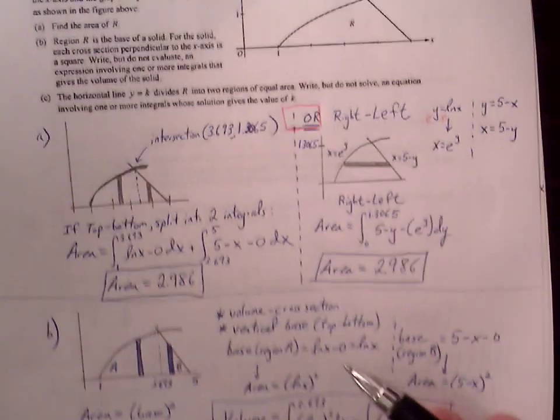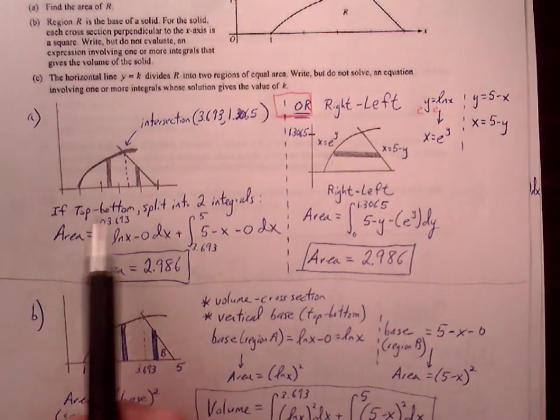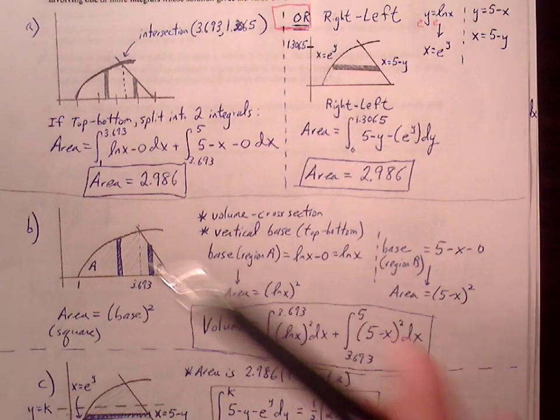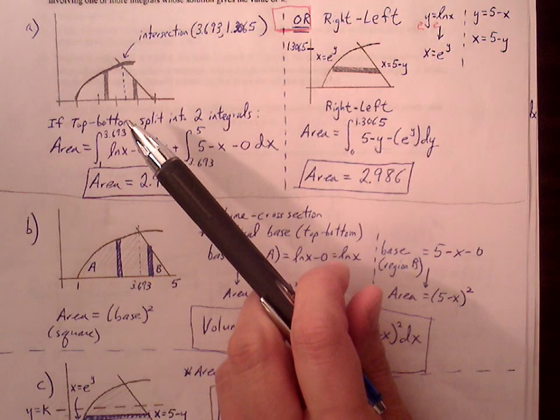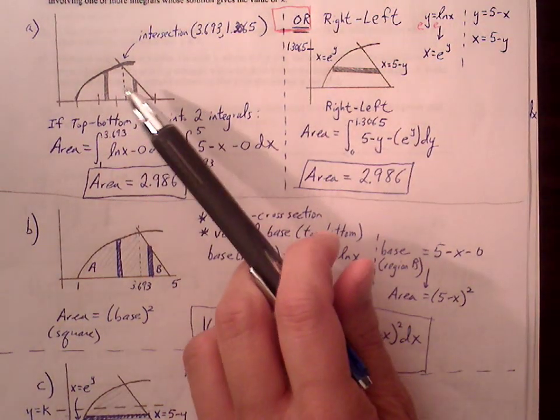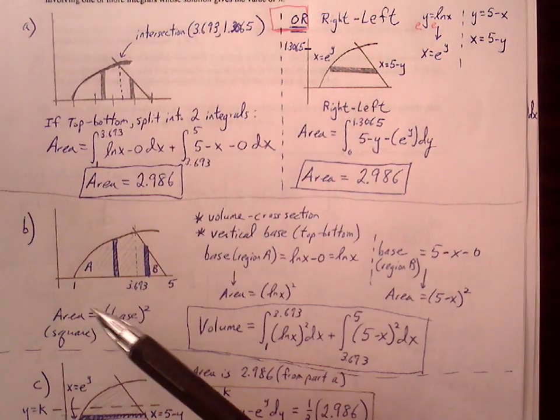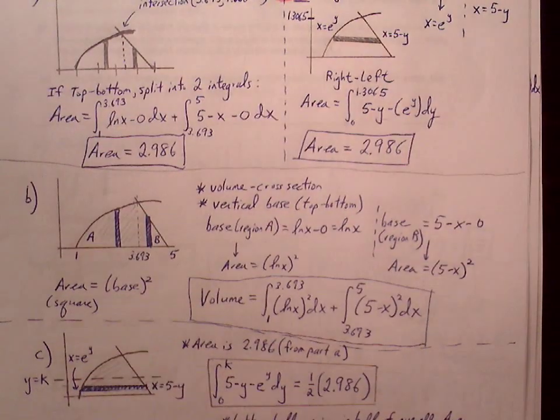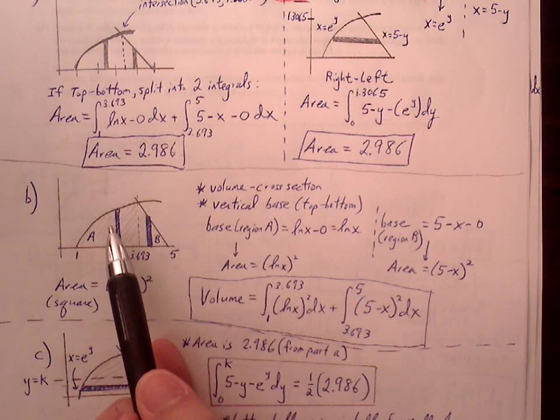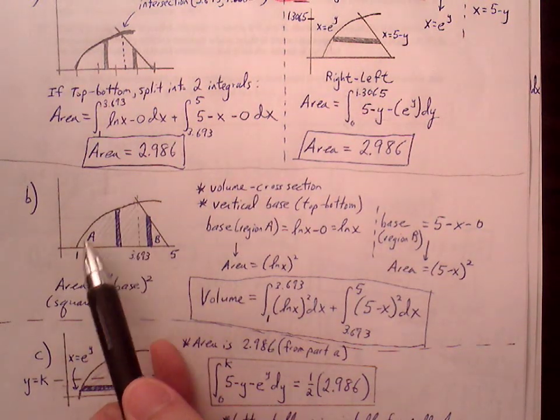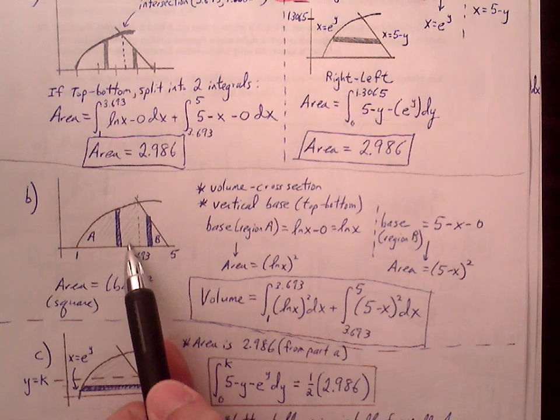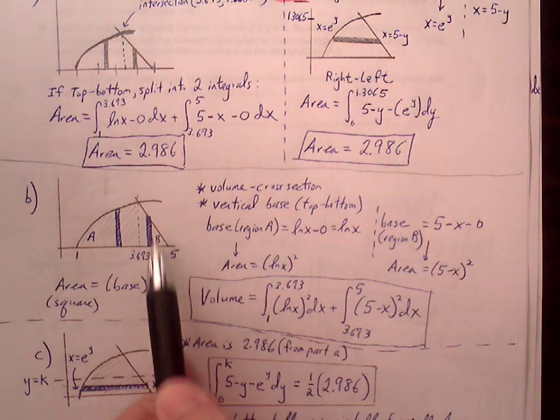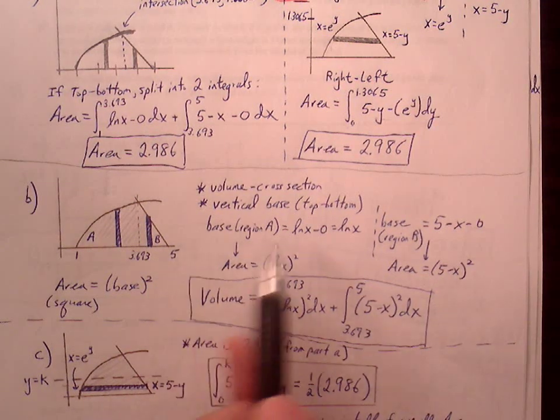We're building a square on top of this base. If we do top minus bottom, just like in part A, we have different top functions depending on which region we're talking about. We're going to have to split this into two regions again. The base length of region A on the left: top minus bottom is natural log of x minus 0. For the region on the right, it's 5 minus x minus 0. That's my base length.